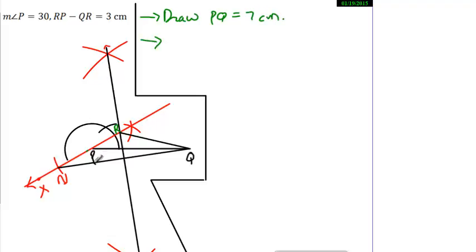Draw PQ is equal to 7cm. Now what was the angle P measurement? Draw the angle. Take the point here, Z. Anything can be taken. Draw ray PZ such that angle QPZ is equal to 30°.